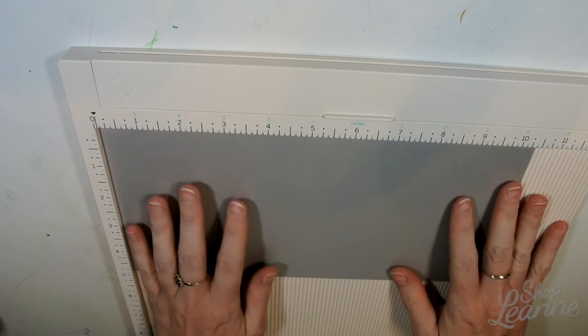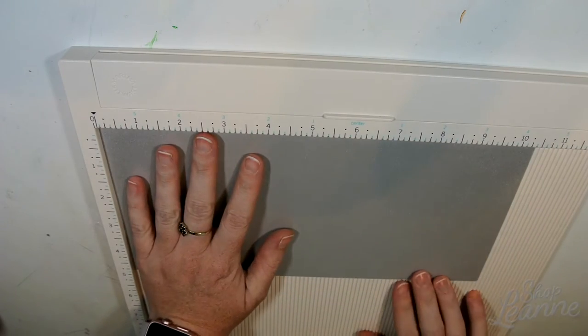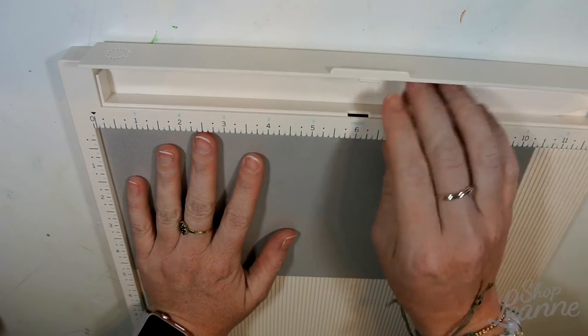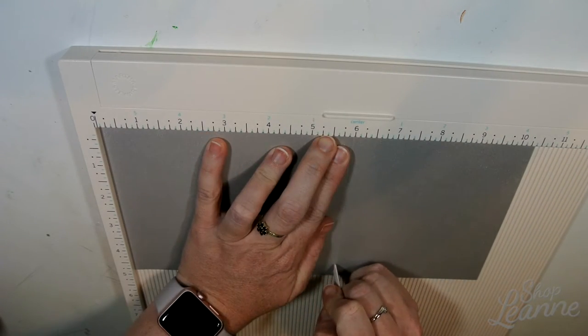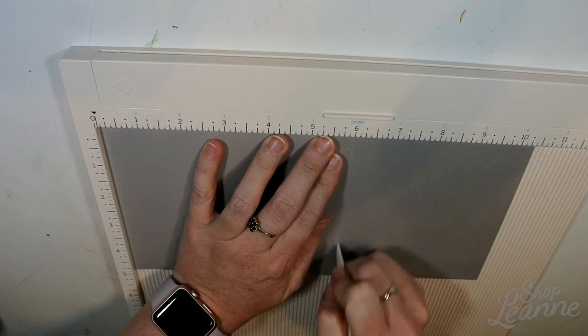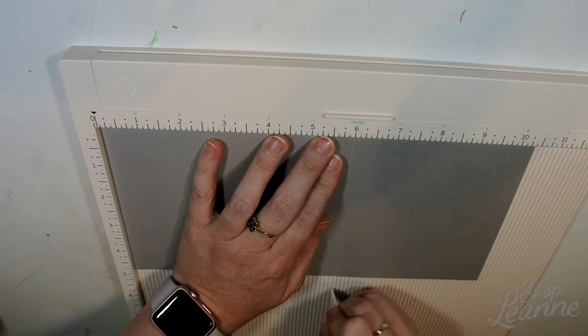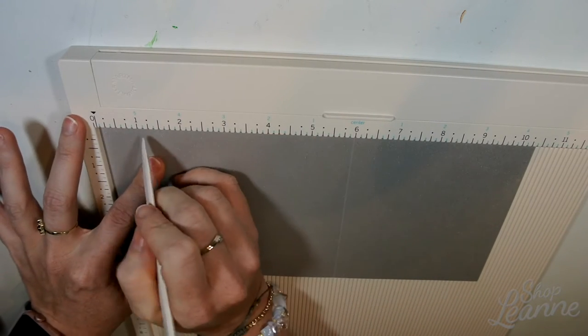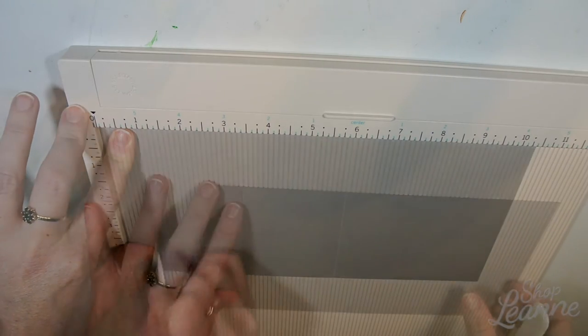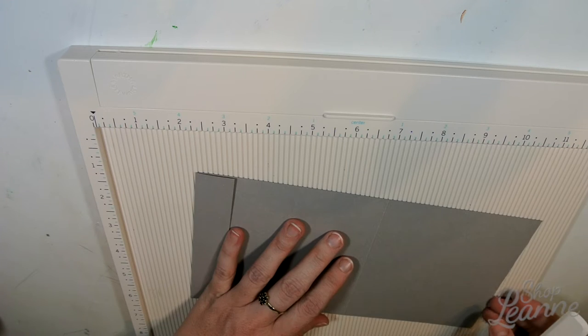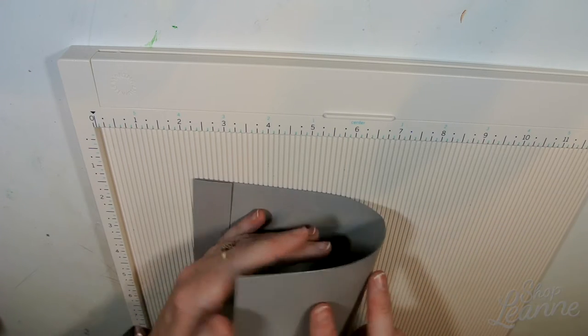I'm going to bring this to my Martha Stewart folding apparatus. I'm using my bone folder and doing a score line at the six-inch mark, and then I'll do one on the left as well at the one-inch mark. This keeps the lines very straight and everything matches up perfectly when it's folded.